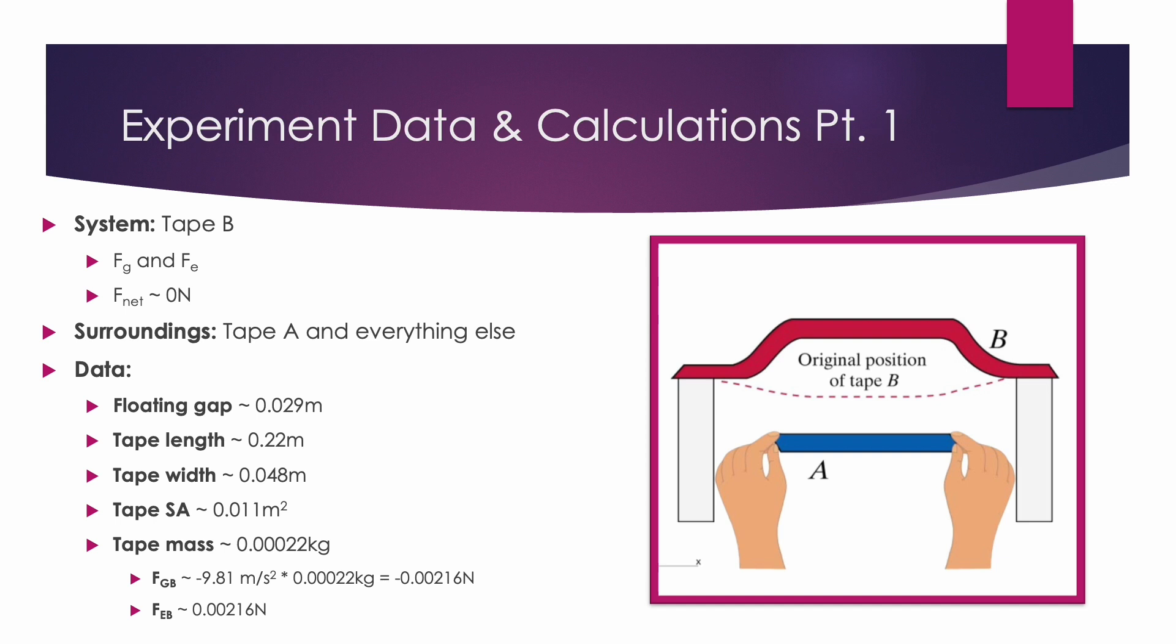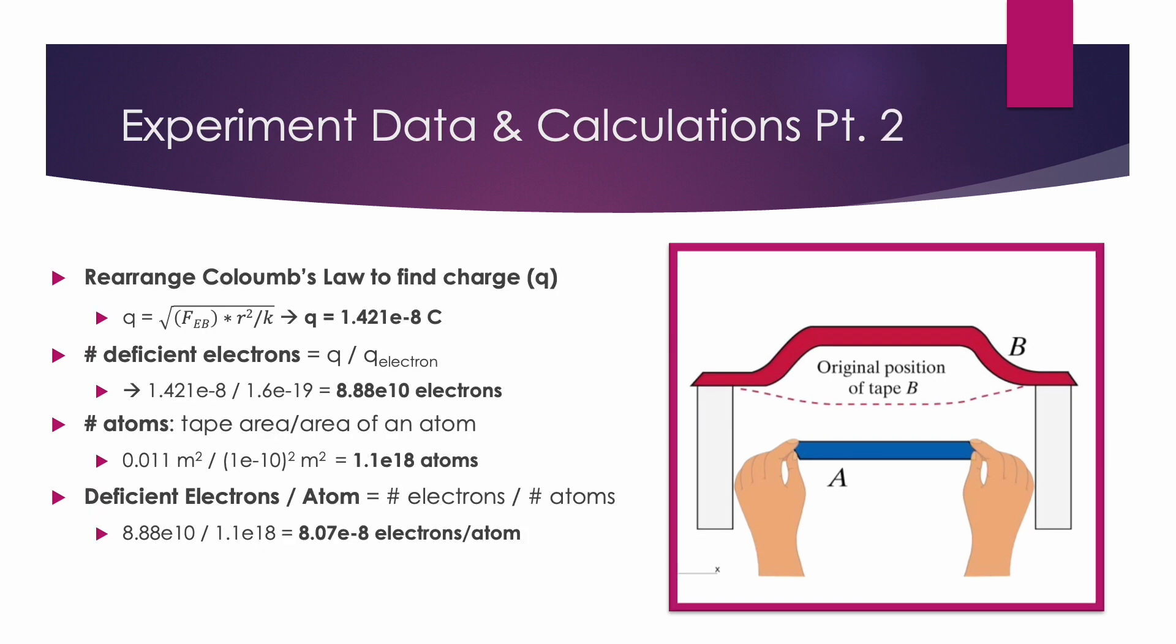We can calculate the force of gravity on tape B to be approximately 0.00216 newtons in the negative y direction, and the electric force from tape A on tape B to be 0.00216 newtons in the positive y direction. We can calculate the charge of our U-tape by rearranging Coulomb's law and solving for Q to get our 1.42 times 10 to the negative 8 Coulombs.